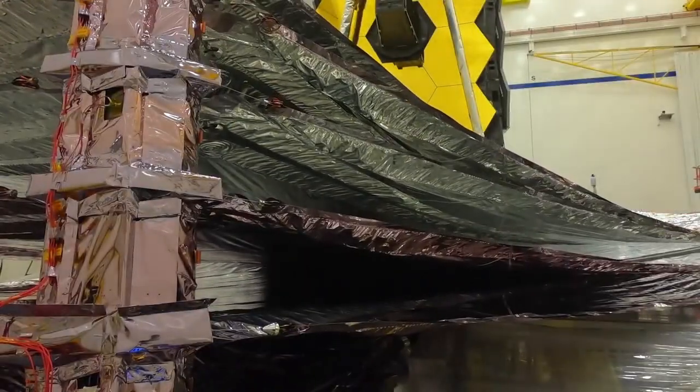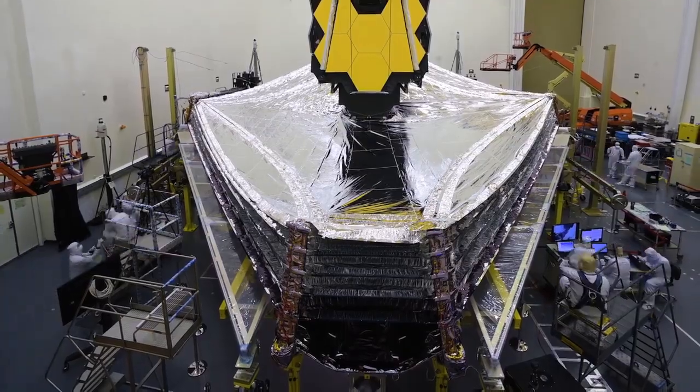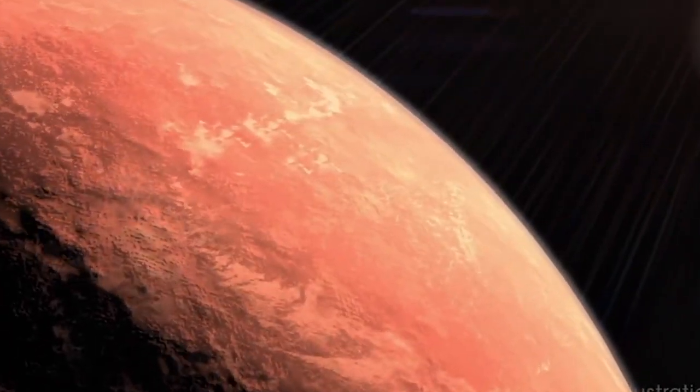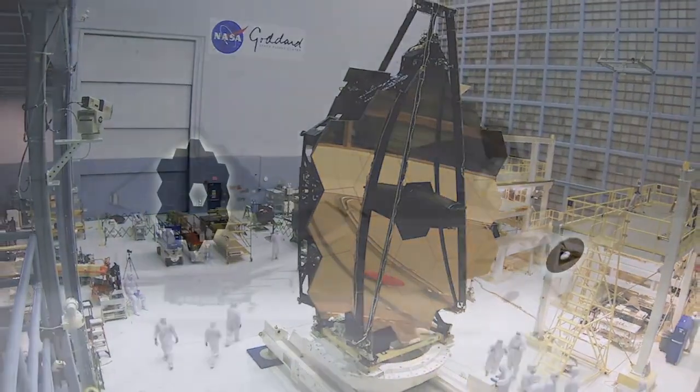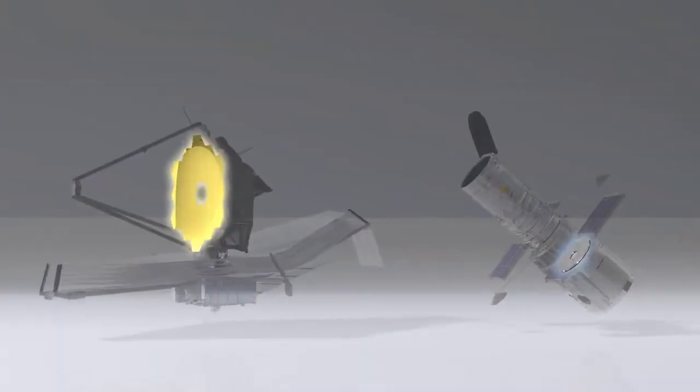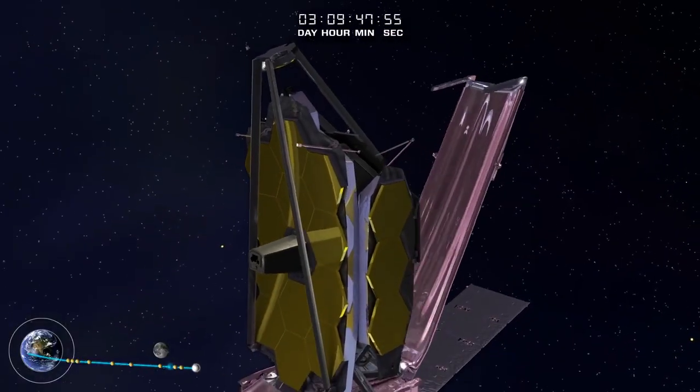The successful deployment of all parts of the Webb Space Telescope is a historic event. The mission crew took a major leap a few weeks later on January 24, 2022, when they fired Webb's thrusters and sent the Space Telescope into orbit around the sun at the second Lagrange point, its ultimate destination, about a million miles from Earth.